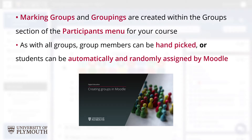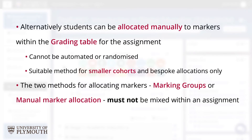Once created, these groups and groupings can be easily linked to the relevant assignment. Alternatively, you can use the manual Allocate Markers option available from the grading table on the submission page itself. This is a more labour-intensive process, lacking the ability to automate or randomise marker allocation, which furthermore will need to be repeated from scratch for every new assignment, but it can be a useful bespoke method for small cohorts.